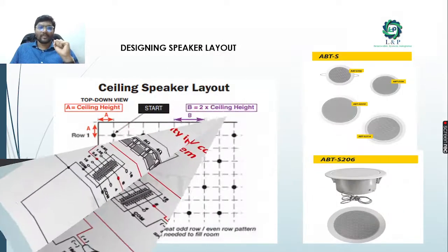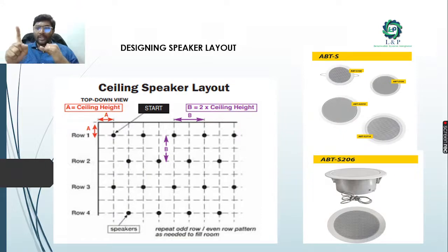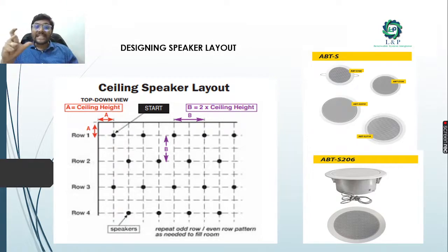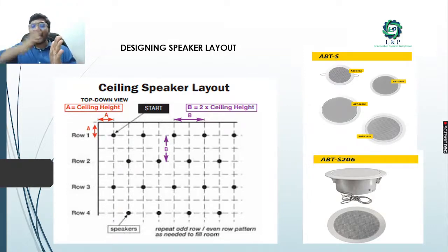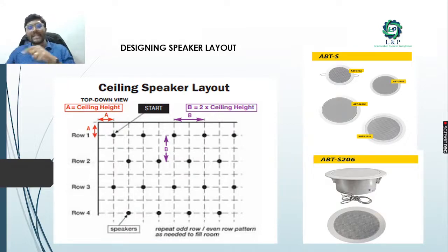When installing ceiling speakers, the first speaker should start at a distance equal to the ceiling height from the wall. For example, if the ceiling height is 10 feet, start the first speaker 10 feet from the wall. The distance between the first and second speaker should be two times the ceiling height - so with a 10-foot ceiling, the second speaker should be 20 feet from the first. Row-to-row distance should also be two times the ceiling height, which is 20 feet in this example.